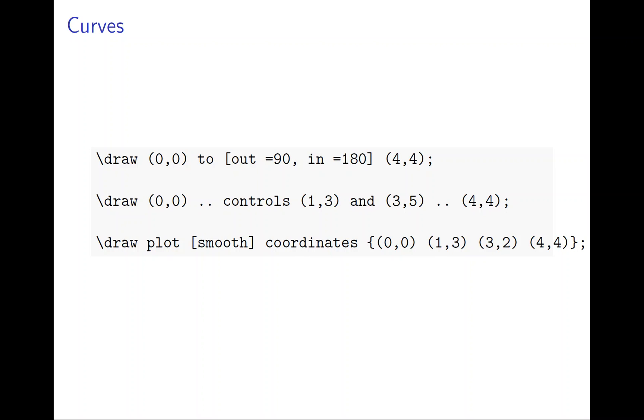This is what the first thing. Draw from 0,0 to 4,4 coordinate. And to here I have an out coordinate and in coordinate. Out 90 is drawing from the, come out from the north. And go in 180 is going from the east. And the degree basically satisfied following what the usual 360 degree. Complete east is 0. Complete north is 90. West is 180 and south is 270. And east again is 360.